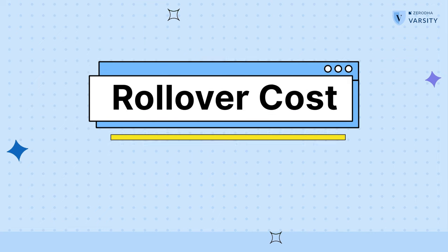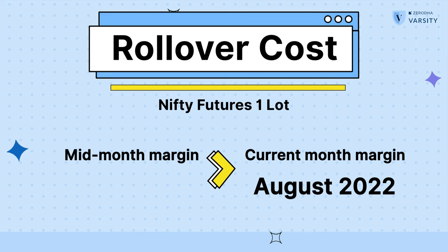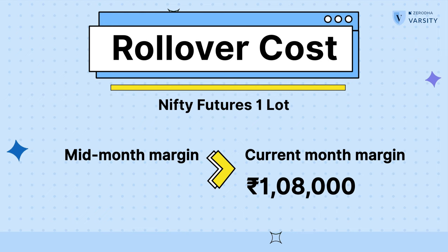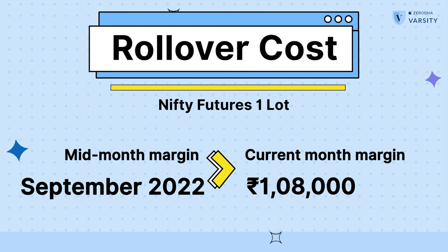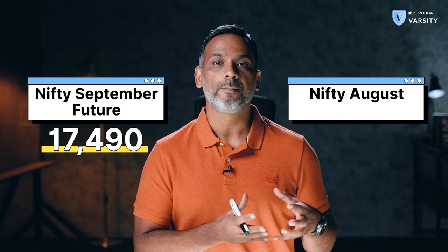Rolling over your position comes at a slight premium, and this is because the margin required for the mid-month contract is slightly higher than the current month contract. For example, the margins for the August 2022 contract for one lot of Nifty is roughly about 1,08,000, whereas the margin required for the September 2022 contract is roughly about 1,09,500. Now, why is the margin higher for the September contract as opposed to the August contract? That's because the September futures contract is trading at a higher price compared to the August futures contract, given that the underlying is the same.